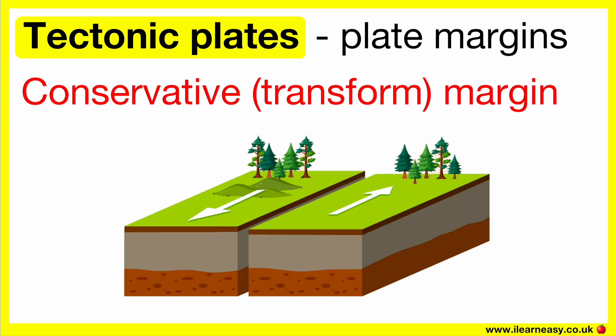Conservative plate margin, also known as transform. This is when two plates slide against each other, either in the same direction or different directions at different speeds. This can result in earthquakes.